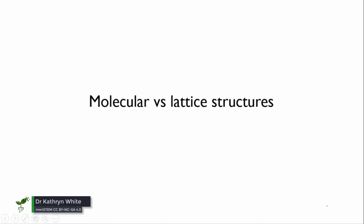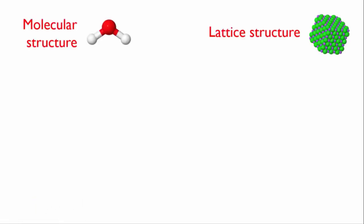In this video we're going to clarify the difference between molecular and lattice structures. We've now looked at covalent bonding, ionic bonding, and metallic bonding, which covers all the chemical bonding possible.